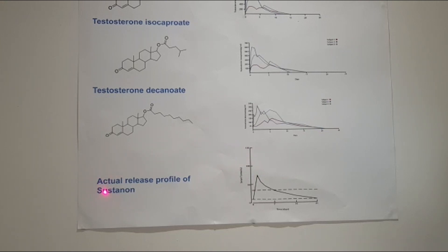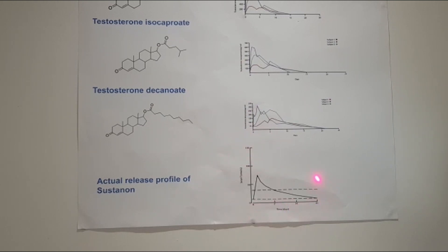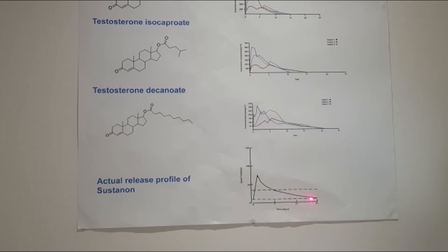We dug out a paper that looked at the actual release profile of Sustanon when you take each individual ester and put them all together, and this is what they found. This range is the physiological range — you get a steep sharp rise which goes over the physiological range, then a gradual reduction back into it, and from day 14 to 21 very, very low levels. In our experience, most people start experiencing symptoms after day 10. So there you have the overall release profile when you put all four esters together.